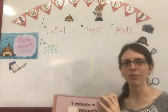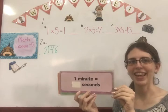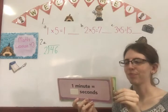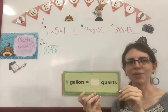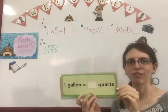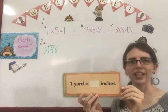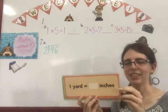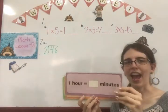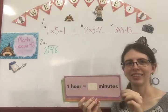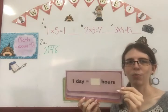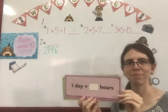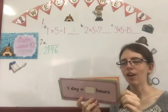First, we're going to start with a quick review of our measures. Try to say the answer before I get to it. Ready? A gallon equals four quarts. One yard equals 36 inches. One hour equals 60 minutes. One day equals 24 hours.